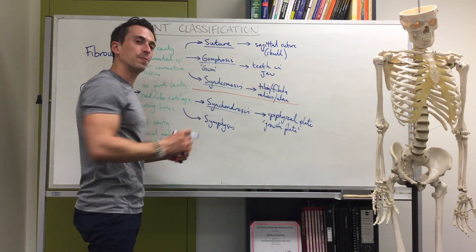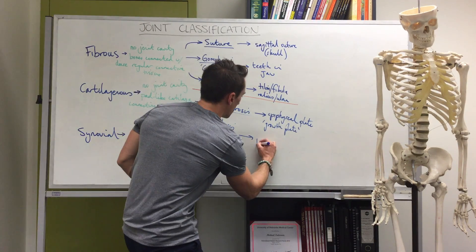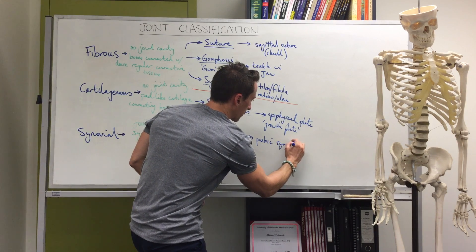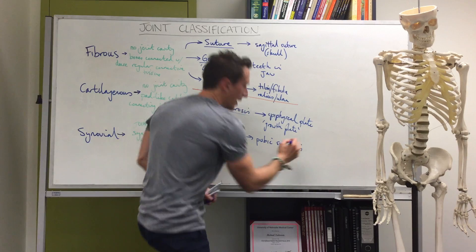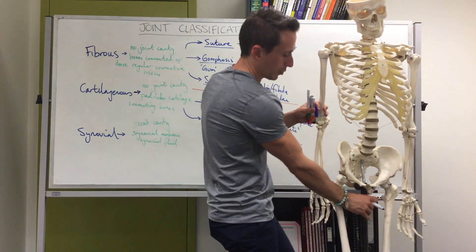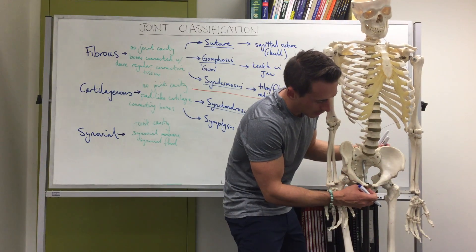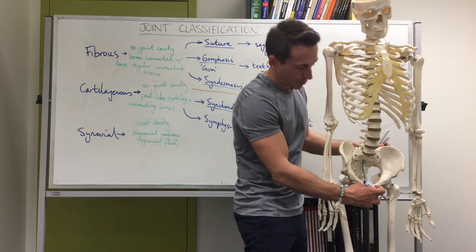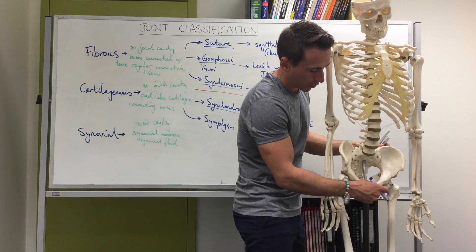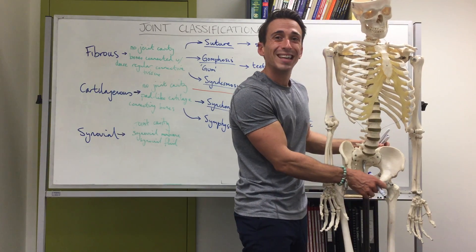The other cartilaginous joint type is a symphysis — specifically the pubic symphysis. Looking at Frank, at the pubis you'll find a bit of cartilage in between, between the two parts of the pubis. This is what we refer to as the pubic symphysis.